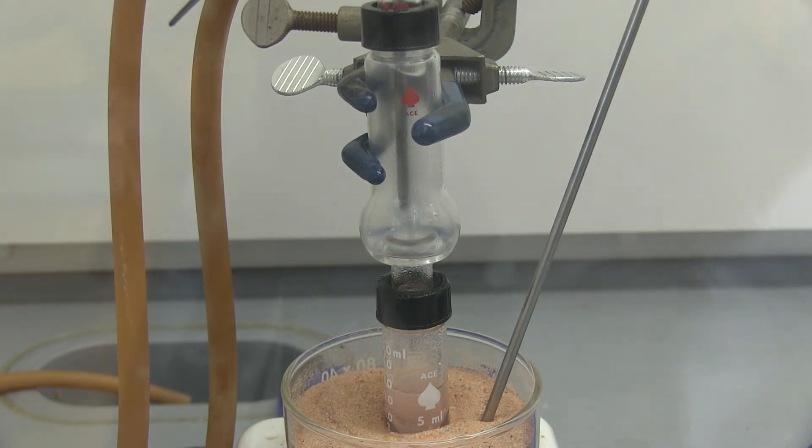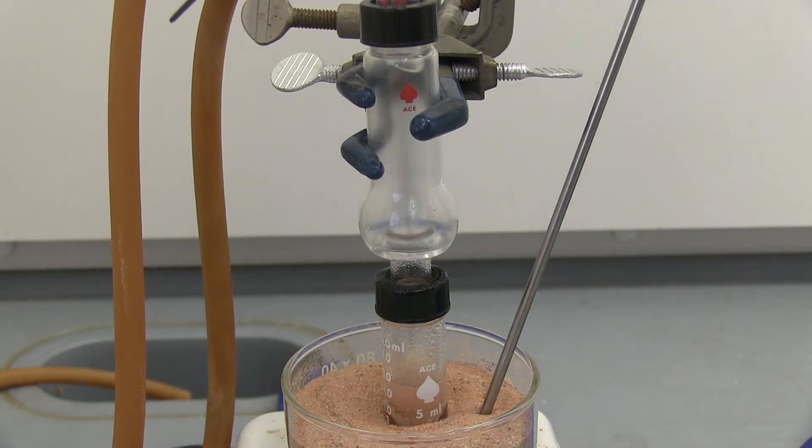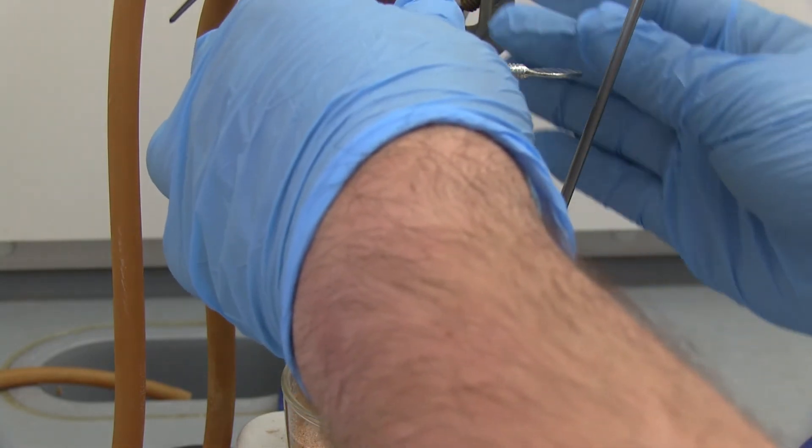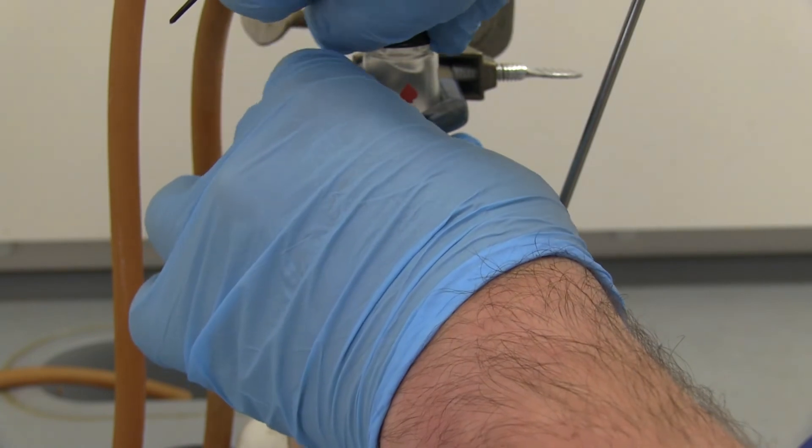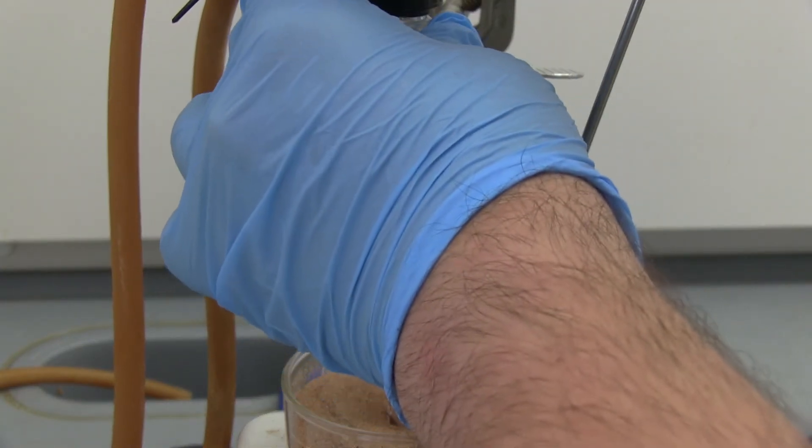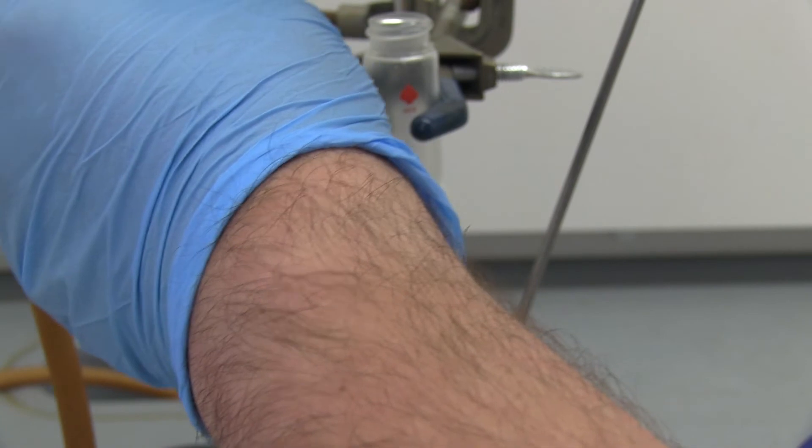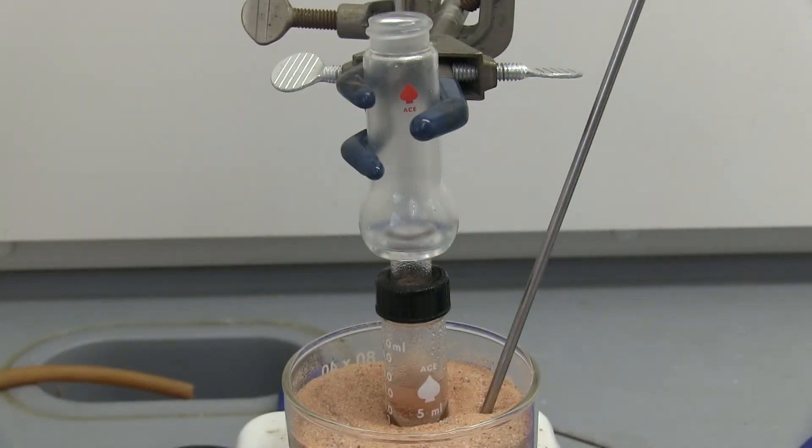It looks like we have enough liquid in there, so I'm going to go ahead and make sure the heat's off all the way and raise up our thermometer, take it out and leave it to the side. Turn off our water and disconnect the water condenser.